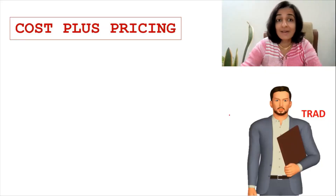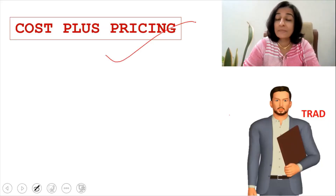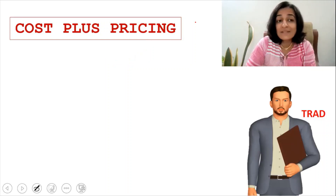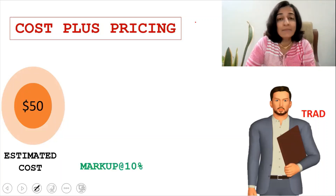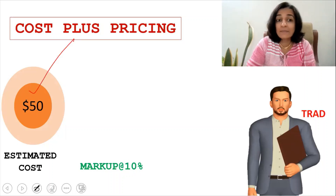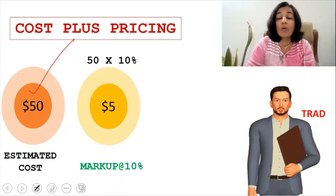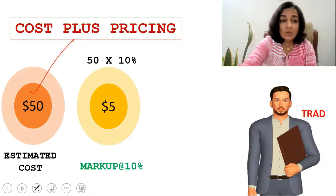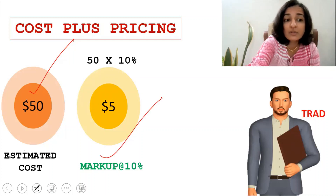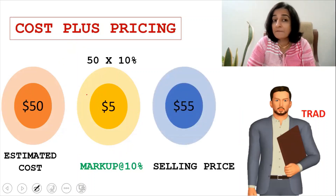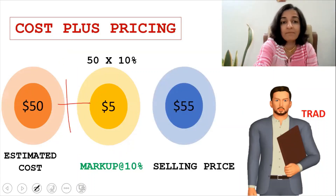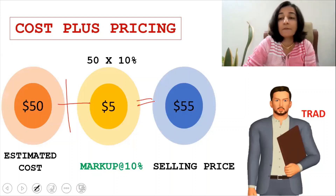The method adopted by Trad is cost-plus pricing. The estimated cost of Trad's product is $50 and he wants a markup of 10%. So what is the profit he wants to get? It's 50 multiplied by 10%, or $5. So he adds the markup to the estimated cost and fixes the selling price at $55. That is 50 plus 5 gives $55.